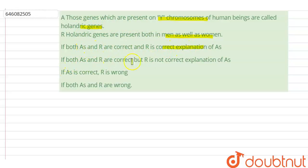And the options are: if both assertion and reason are correct and reason is correct explanation of assertion; if both assertion and reason are correct but reason is not correct explanation of assertion; if assertion is correct, reason is wrong; if both assertion and reason are wrong. So holandric genes, holandric genes are...